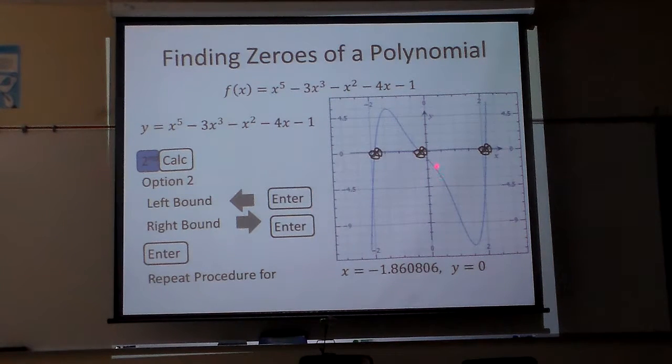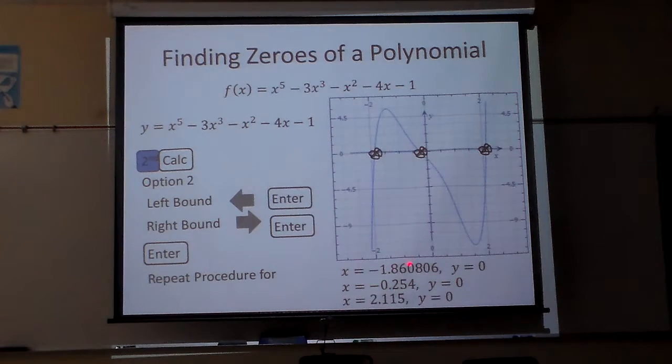You always want to be left of the line, then right of the point you're looking for when you do the left bound and right bound. And that's another point. That point right there is at negative 0.254, and y is zero. And the last one is at 2.115, and y is zero.